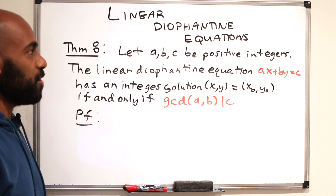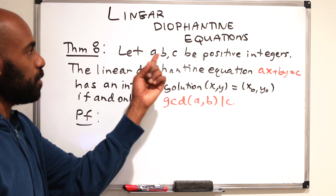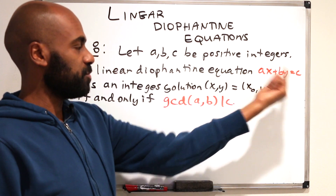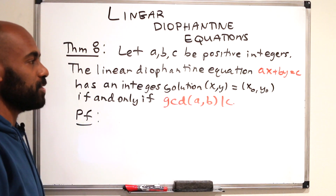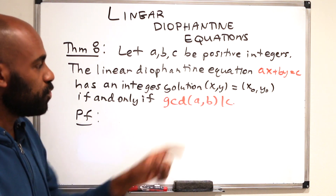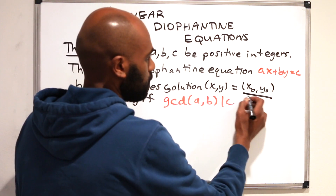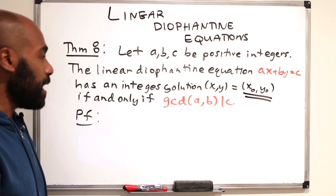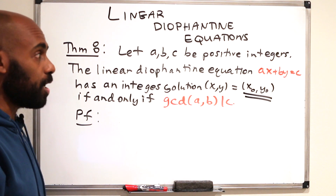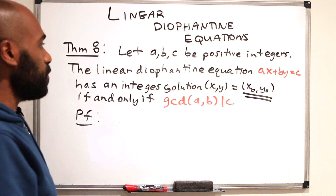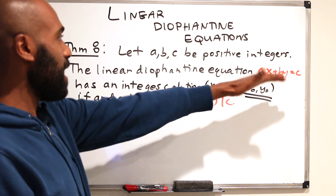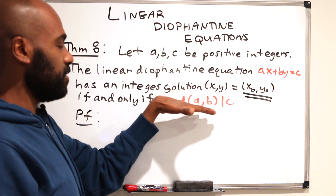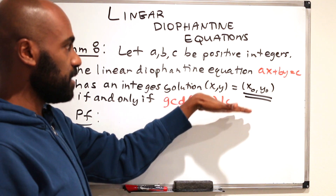Theorem 8 in our book states: given positive integers A, B, and C, the linear Diophantine equation ax + by = c has an integer solution if and only if the GCD of A and B divides C. We need to prove two things: that having a solution implies the GCD of A, B divides C, and that the GCD of A, B dividing C implies a solution exists.